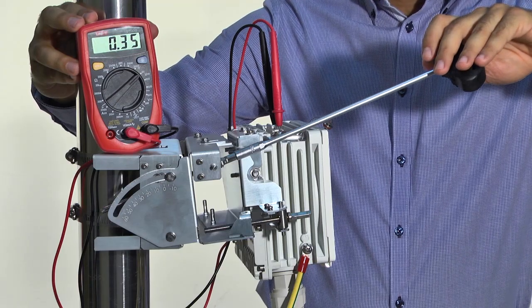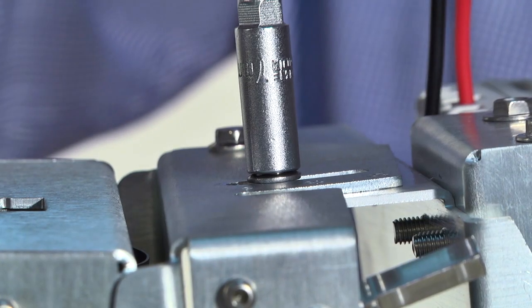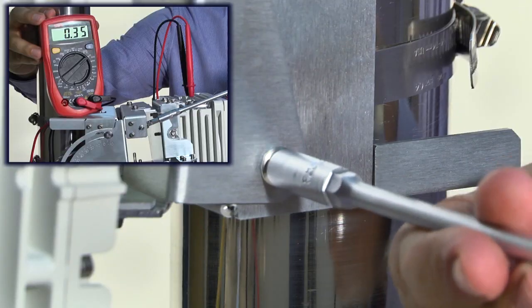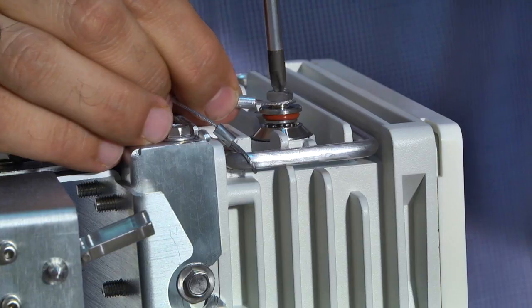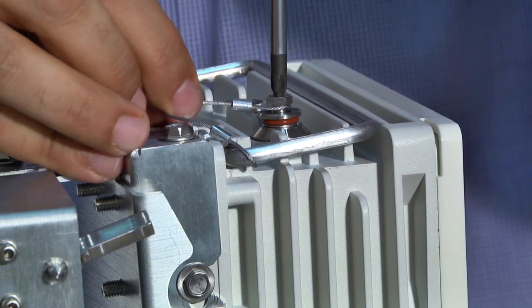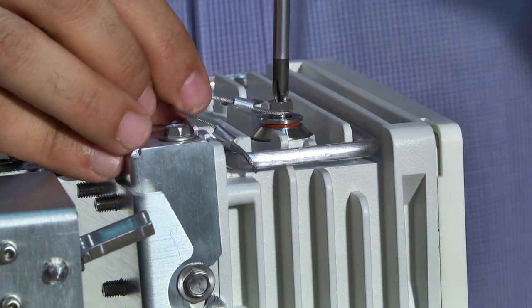Once the optimum position has been reached, tighten and lock all bolts. Use the DVM to verify that the RSSI has not changed after locking all the bolts. Remember to plug the alignment pin back into its socket before resetting the ODU.